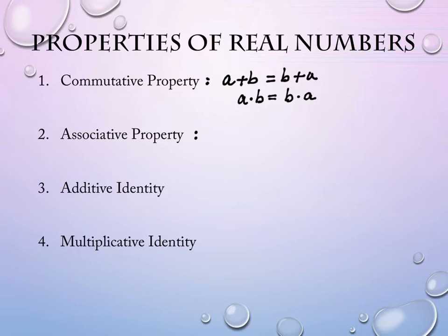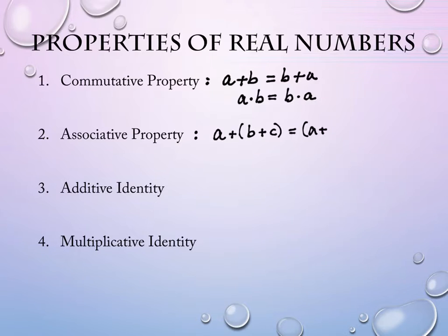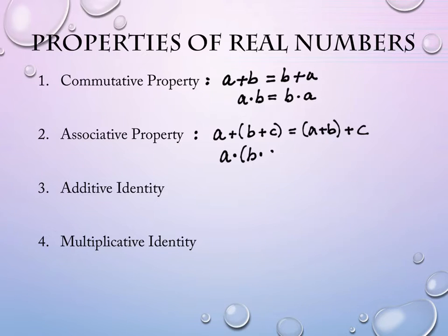The associative property is much the same. It tells us that the order in which I add things is irrelevant. So if I have a plus b plus c, that's the same as adding a and b first and then adding c second. And not only does it work with addition, it also works with multiplication: a times b times c equals a times b times c, just grouped differently.